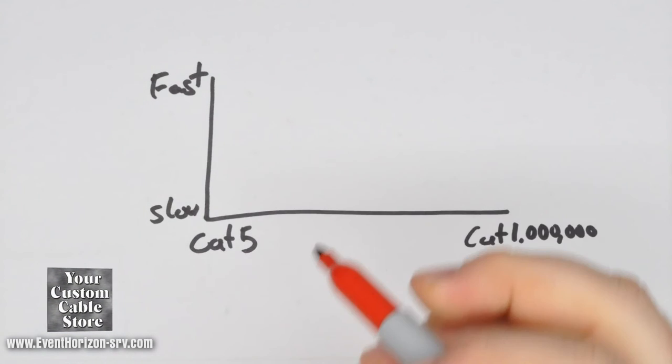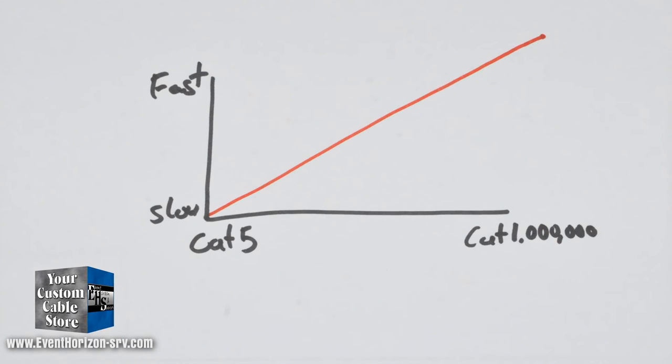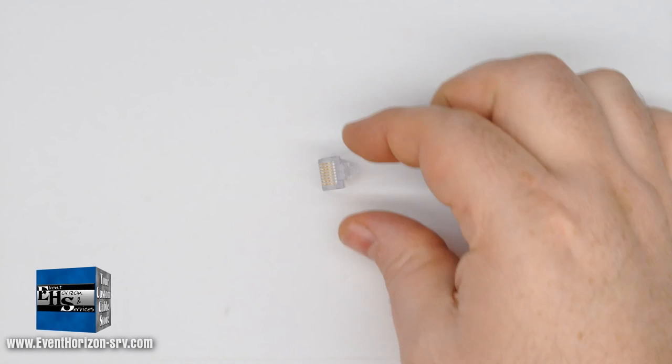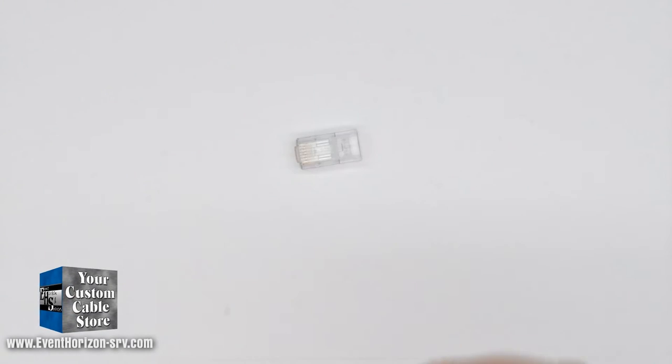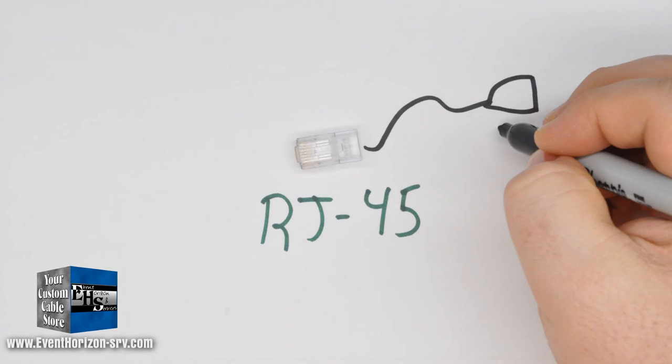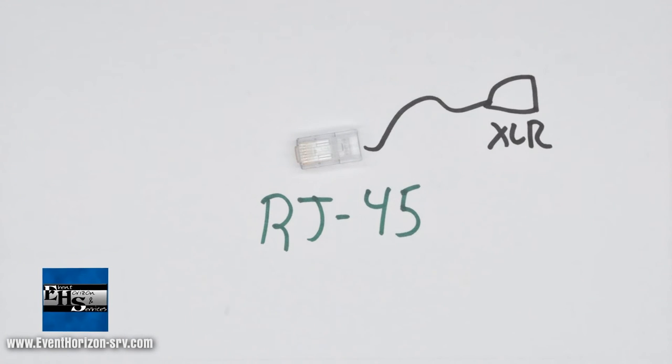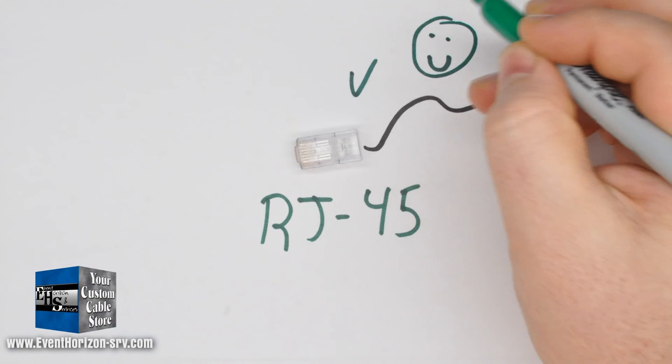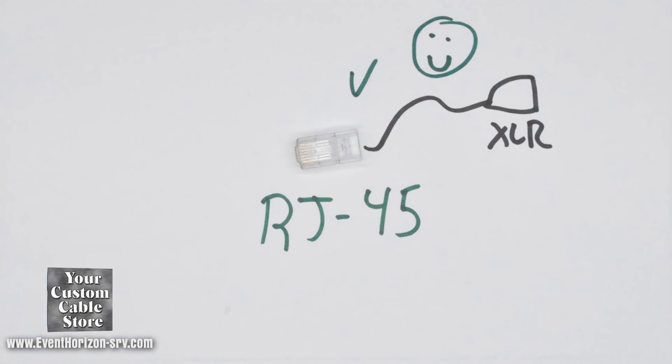So generally, if your application calls for CAT 6, you should not use CAT 5E. Normally these cables are terminated with RJ45 connections. Sometimes you will find applications where CAT cables will be carrying analog audio. It is a perfectly acceptable thing to do, especially if you pick one with the proper shielding.